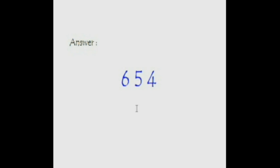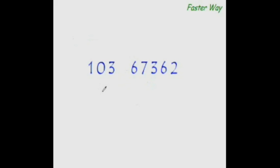Now let me show you the faster way of doing it. The faster way of dividing when the divisor is a three-digit number is not very different from what we have seen in the last video. Since there are three digits, you take the first two digits as your main divisor and keep the last digit as the unused digit. So how many times will 10 go into 67? 6 times is 60, so write 6 here and the remainder is 7.